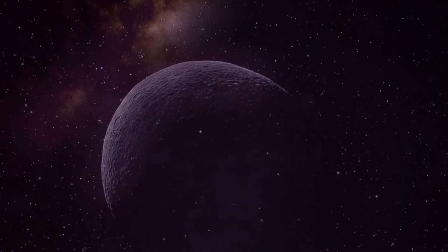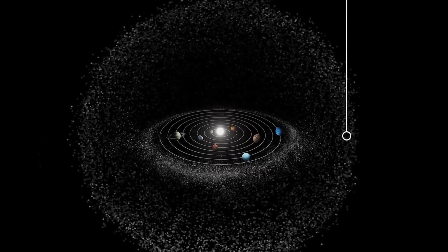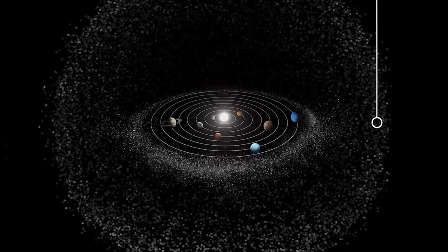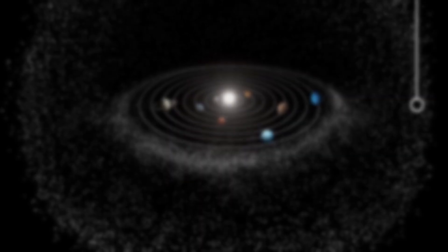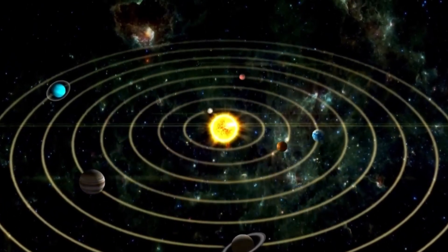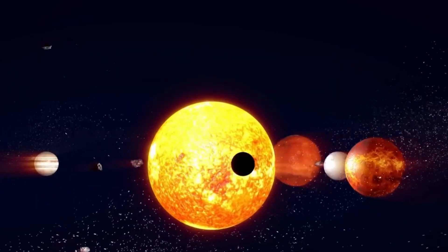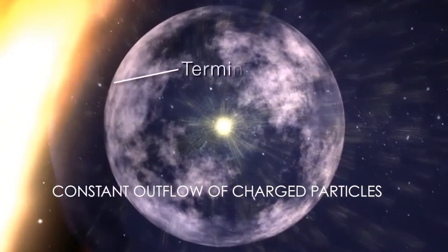These structures aren't static features on a cosmic map. As our solar system completes its 225 to 250 million-year orbit around the galactic center, we continually encounter dramatically different galactic environments. This journey carries us through varying densities of interstellar matter, different radiation environments, and proximity to star-forming regions that conventional models rarely integrate into their simplified solar system representations. This dynamic movement, not the static model shown in textbooks, is our true cosmic reality.